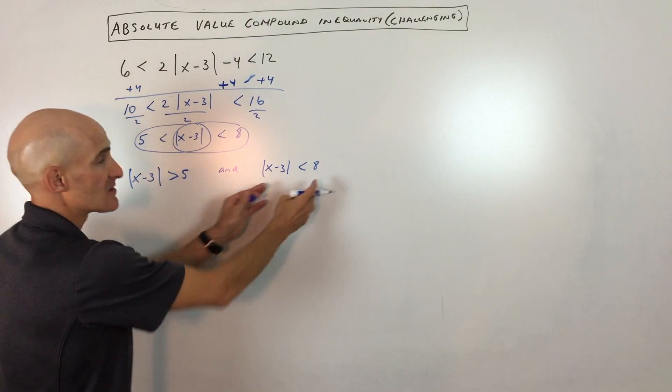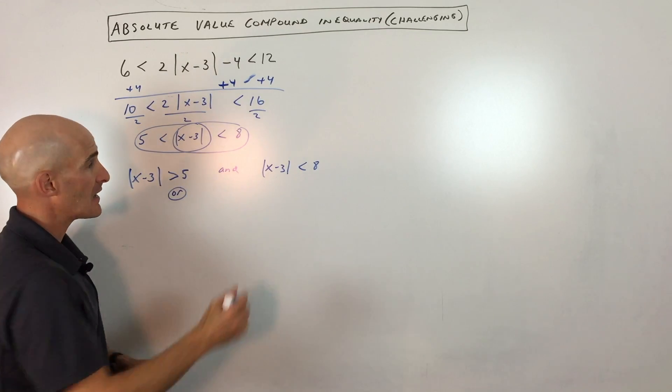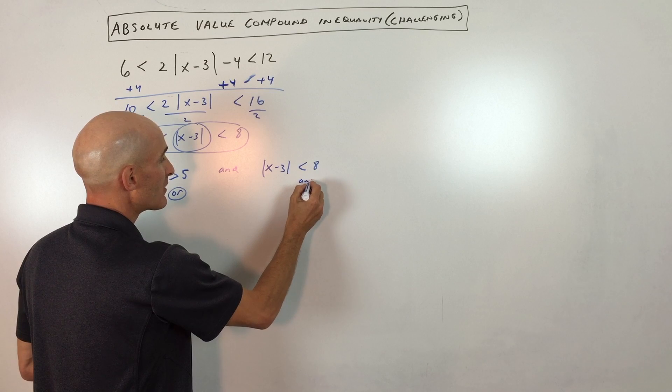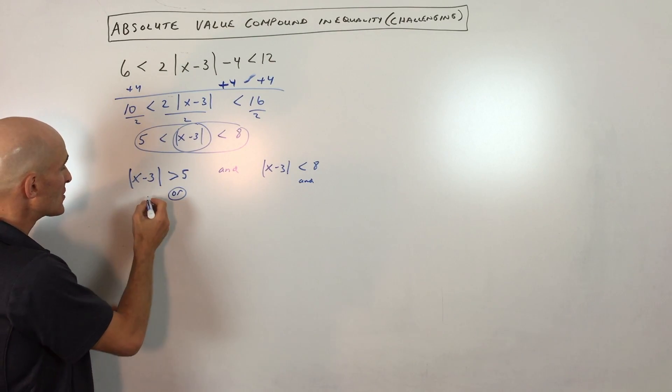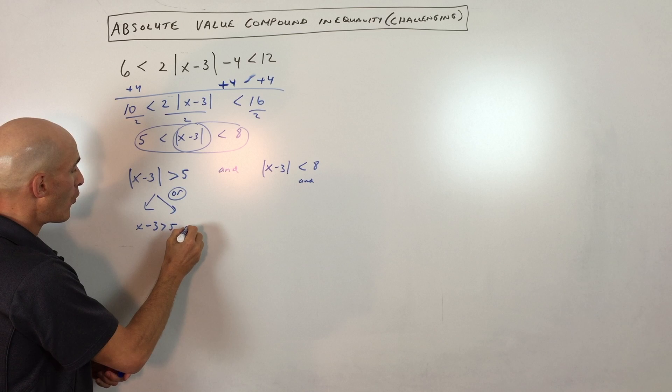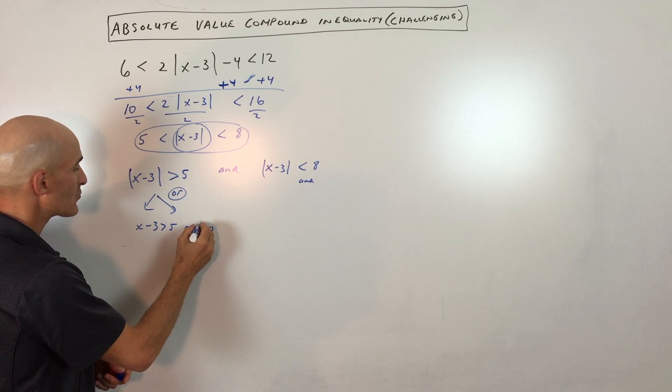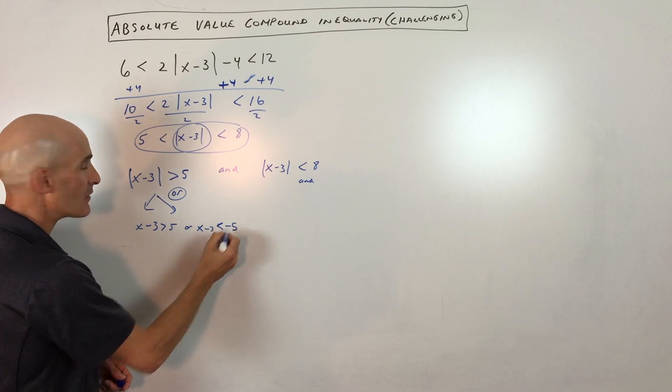So now what we're going to do is we're going to solve these separately. So here what I'm going to do, because this is a greater than problem, we're thinking or, and this one is a less than problem, and we're thinking and. So that's an important distinction. And so what we're going to do is we're going to split this up into two problems. We've got x minus 3 is greater than 5, or x minus 3 is less than negative 5.